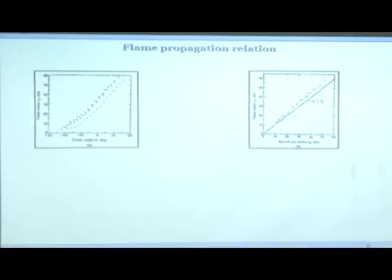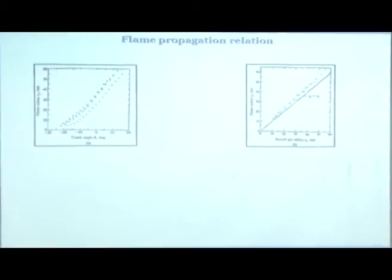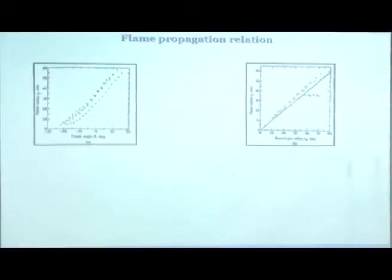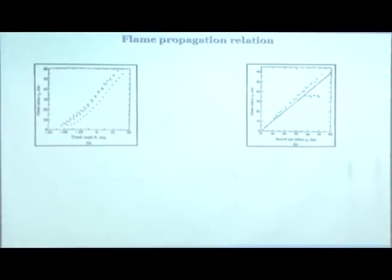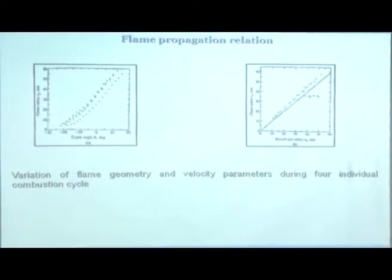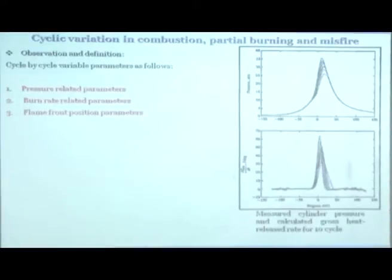If one cycle were exactly the same as the next, the curves should overlap, but they clearly do not. This shows burnt gas radius and flame radius — the outer radius is almost linear. This demonstrates the cyclic variations in combustion, including partial burning and misfire.